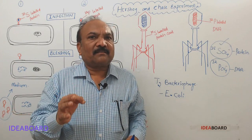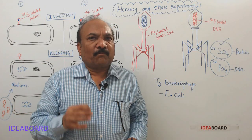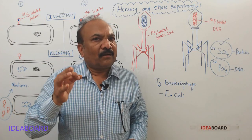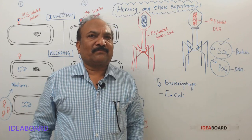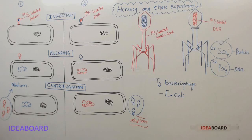From this, they concluded that DNA is the genetic material, but not the protein. This experiment provided unambiguous proof for DNA as the genetic material, confirming that DNA is most likely used as the genetic material by the bacterium and bacteriophage.